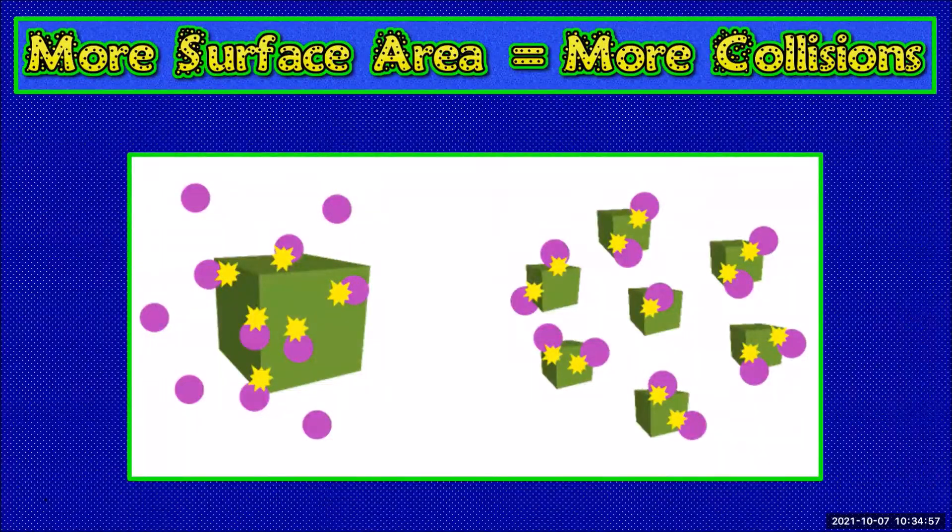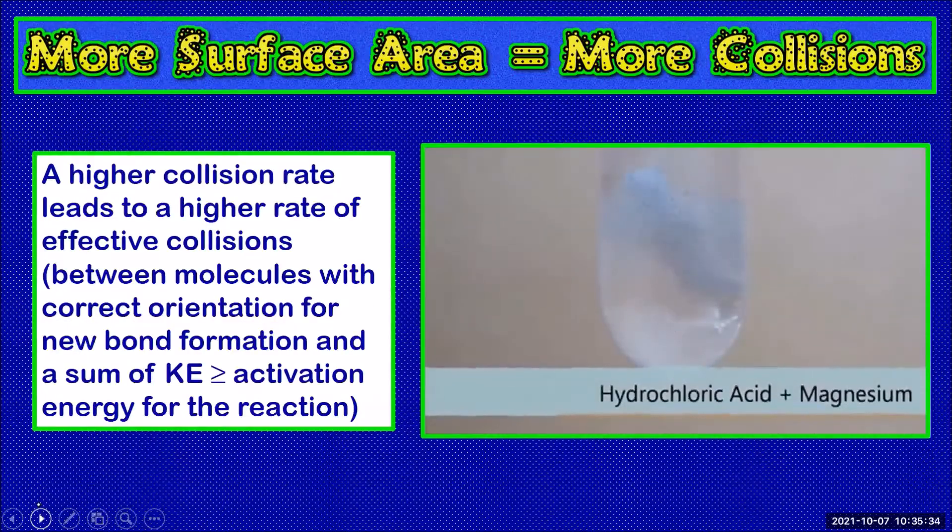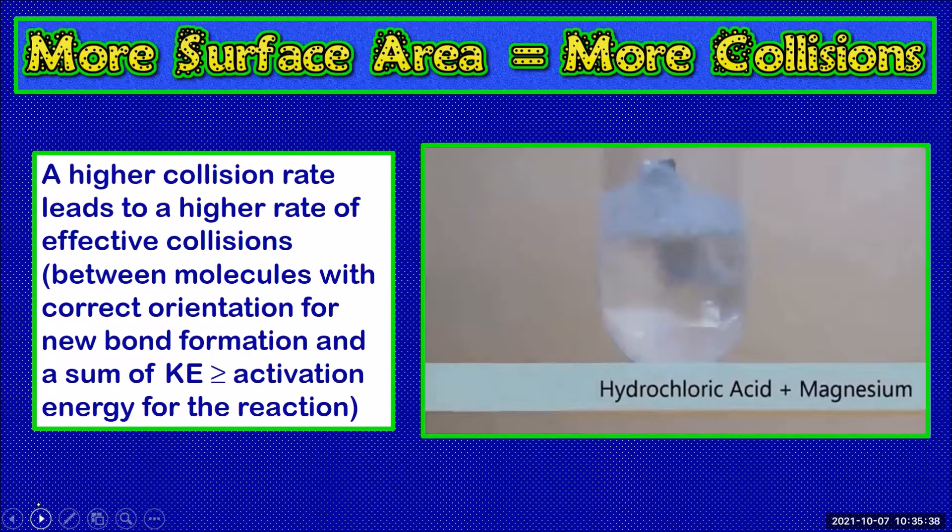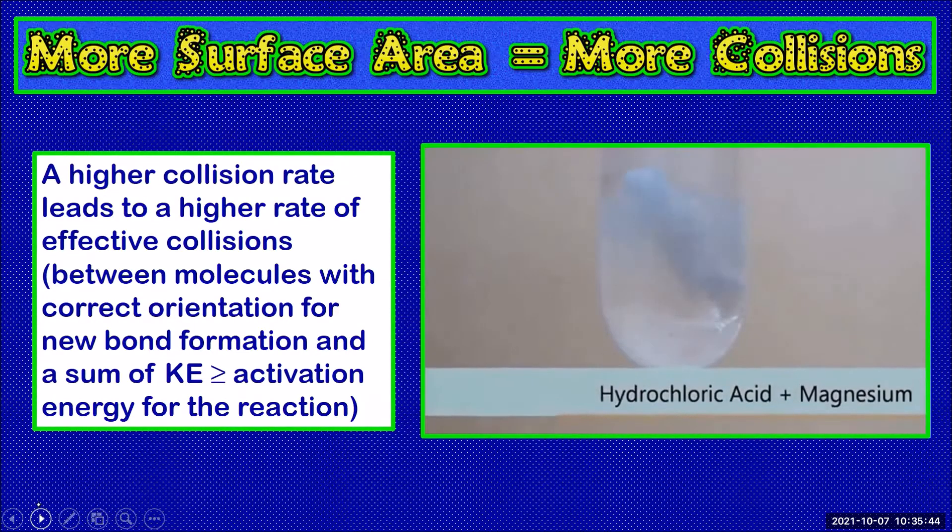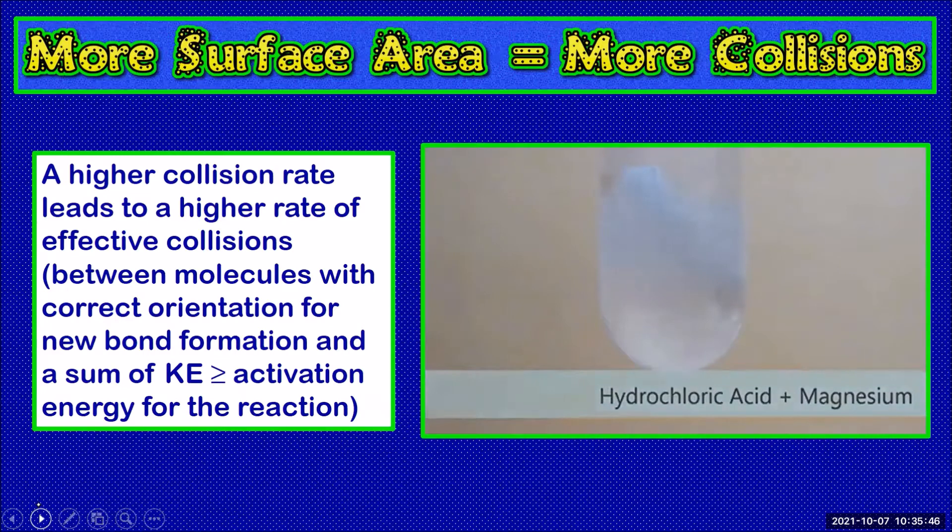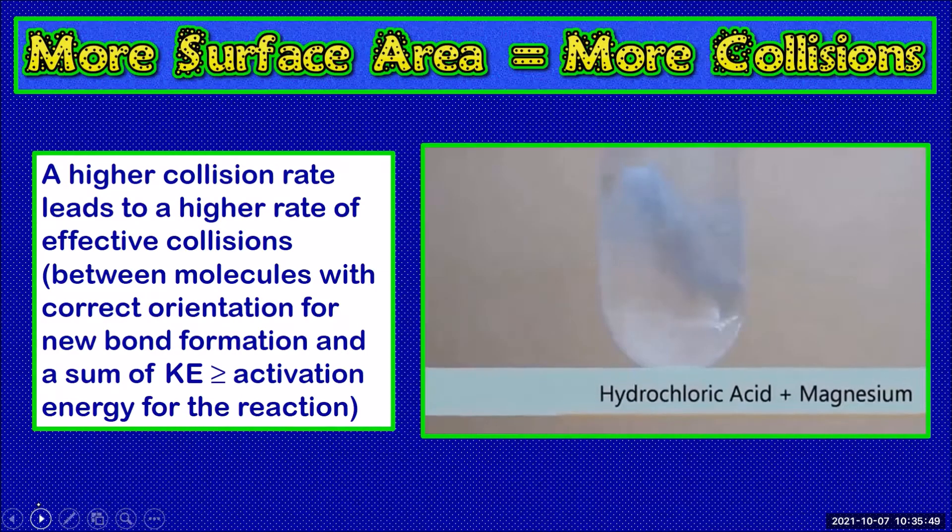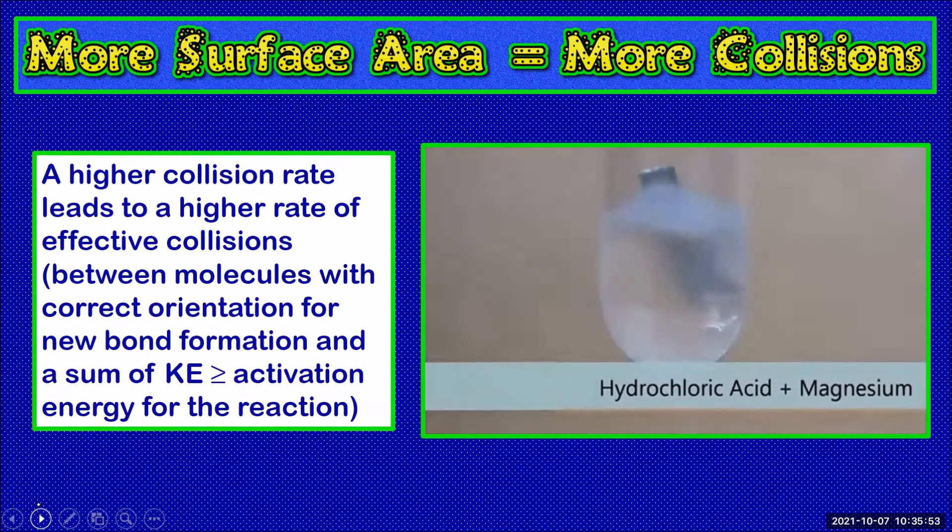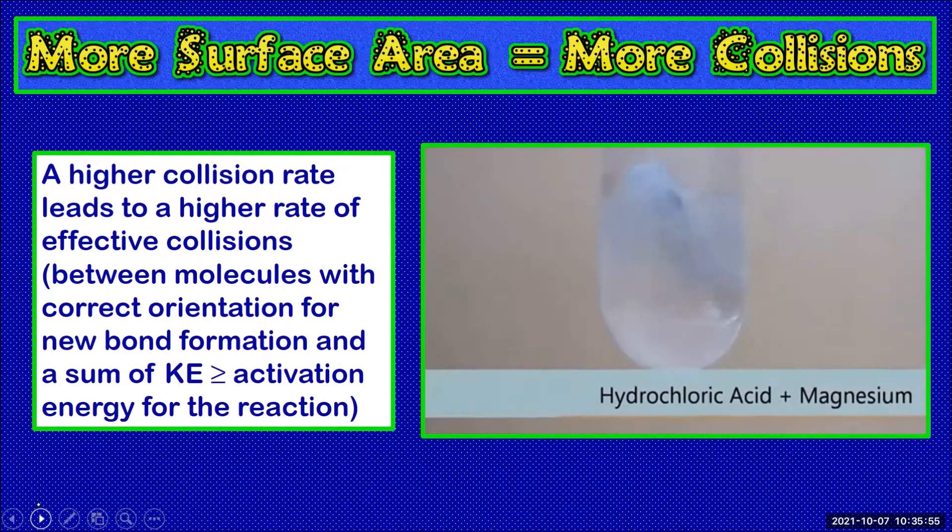Now there are many collisions that can occur between the acid and the magnesium atoms. We know that increasing the number of collisions will statistically increase the number of effective collisions. Of course the scientific way to say effective collisions is collisions between molecules with correct orientation for new bond formation and a sum of kinetic energy greater than or equal to the activation energy for the reaction.